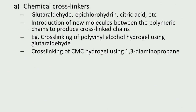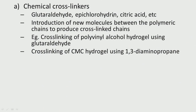Common chemical cross-linkers include glutaraldehyde, epichlorohydrin, and citric acid — small molecules introduced between polymeric chains to produce cross-linking. For example, cross-linking of PVA hydrogel using glutaraldehyde, or cross-linking of CMC using 1,3-diaminopropane. All these are small molecules placed between two polymer chains to link them.